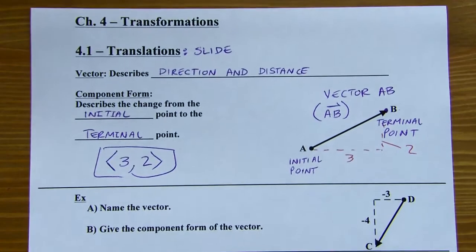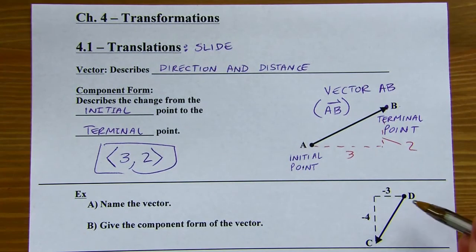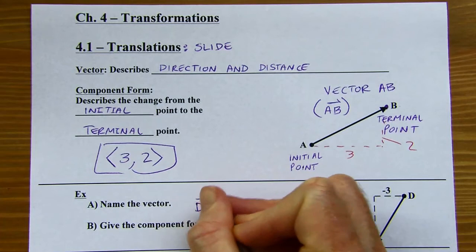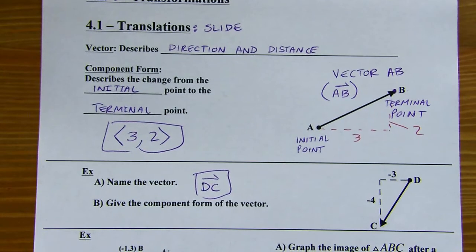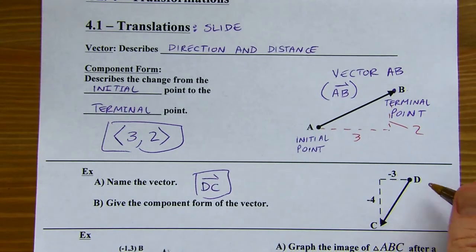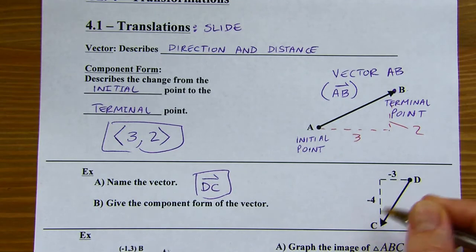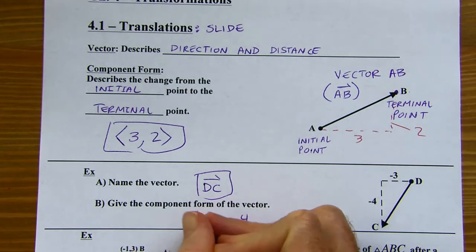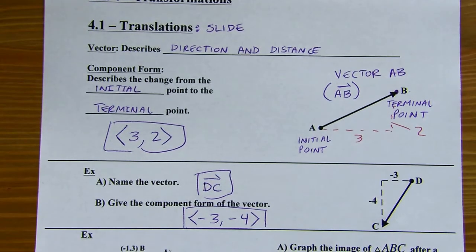Let's look at the next example: name the vector. Some people might call this vector CD, but that would be wrong because it doesn't start with C — it starts with D. So this is vector DC, written in symbolic form. For the component form, starting from the initial point D, I go left three and then down four. Using those special angled brackets, the component form of that vector is ⟨-3, -4⟩.